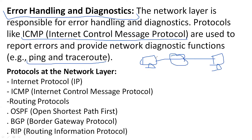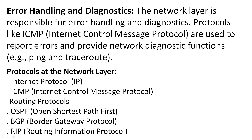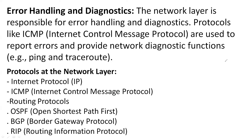The protocols that work over the network layer include Internet Protocol and IP addressing, ICMP, and Routing. In routing protocols there are two types — static routing and dynamic routing. In dynamic routing, we have multiple protocols like OSPF, BGP, Routing Information Protocol, EIGRP, and IS-IS. These are the protocols used over layer three networks.